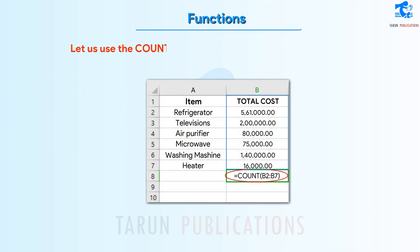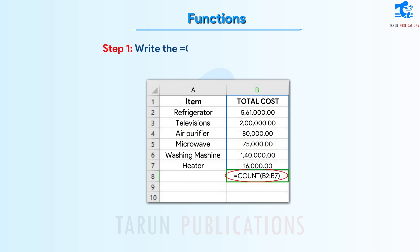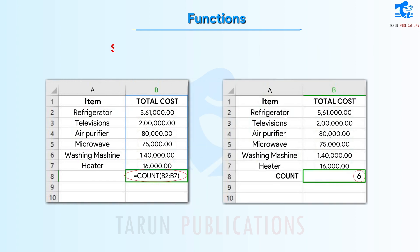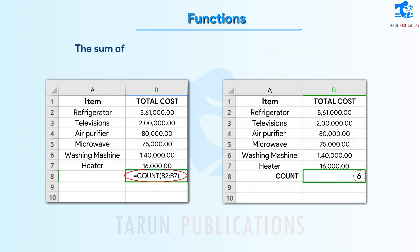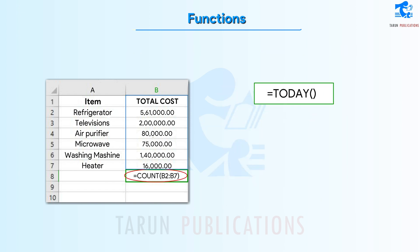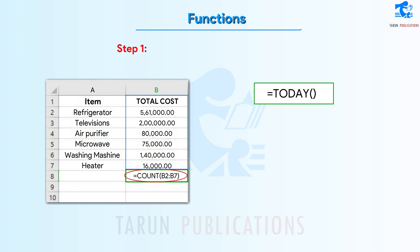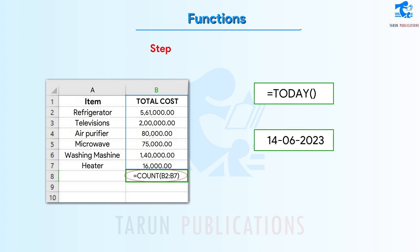Let us use the COUNT(Range) function by following these steps. Step 1: Write the function =COUNT(B2:B7) in a cell. Step 2: Press the Enter key from the keyboard. The count of the selected cell range will be displayed in the cell. Follow these steps to use the TODAY function. Step 1: Type the function =TODAY() in a cell. Step 2: Press the Enter key. The current date will be displayed in the cell.